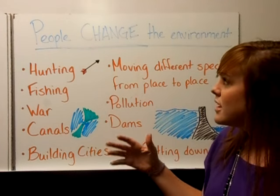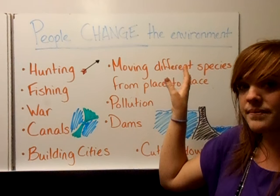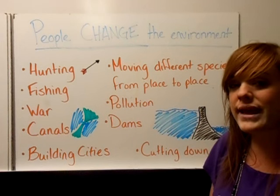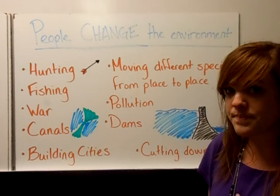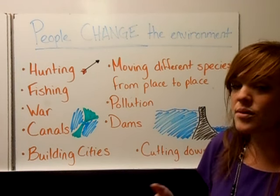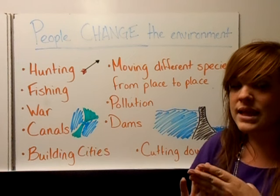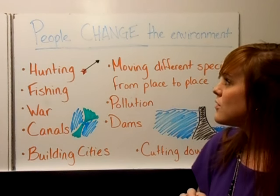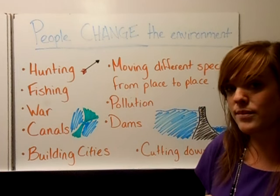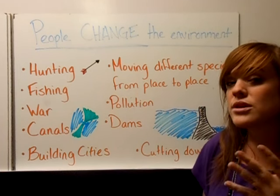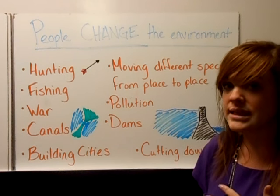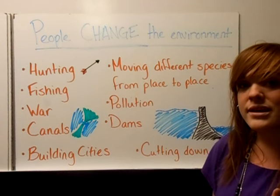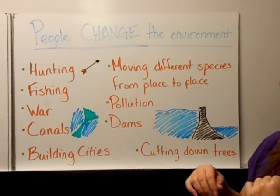Pause and write 'people change the environment.' You need to pick five ways that people change the environment. To summarize: you need four ways people adapt to the environment, four ways people use the environment, five ways people change the environment, and the definitions of renewable and non-renewable resources. If you have all of those things, you're good. If not, rewind and get everything you need. See you in class.